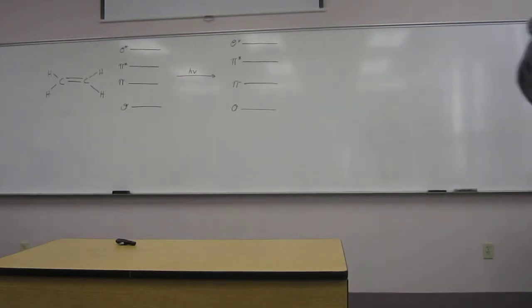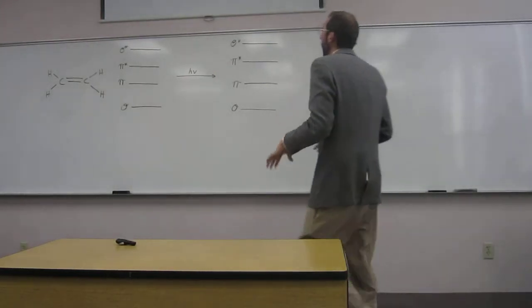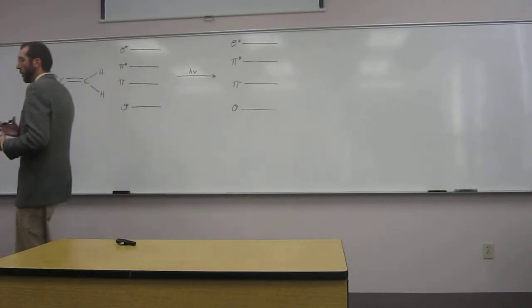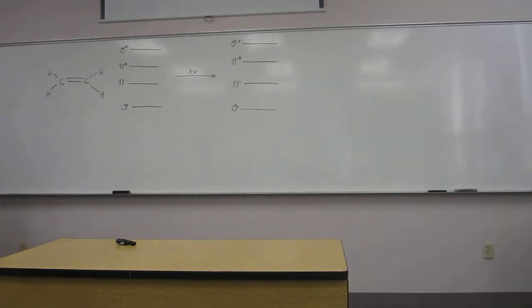Okay, so we're going to do a problem where we're just showing the pi to pi star transition of these electrons in the ethylene molecule.